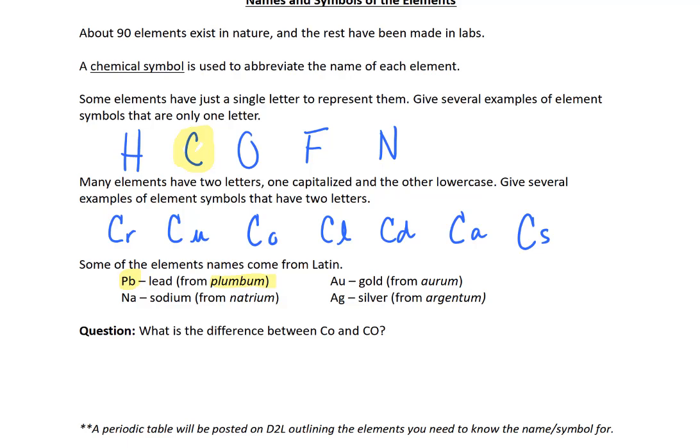Let's end this section with a little question. What is the difference between Co lowercase and CO uppercase? Co uppercase O is an element, cobalt. Whereas CO is two elements sitting right next to one another, which means they're together in a compound, and that compound is called carbon monoxide.